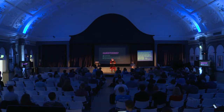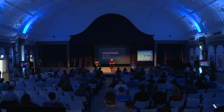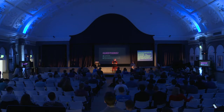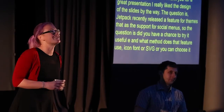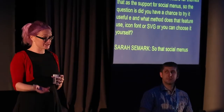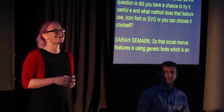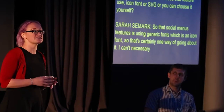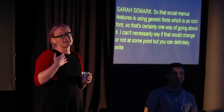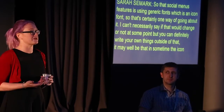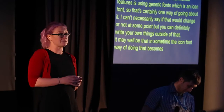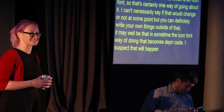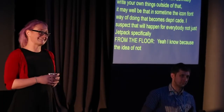Thank you for a great presentation. The question is: Jetpack recently released a feature for themes that adds support for social menus. Did you have a chance to try it, and what method does it use — icon font or SVG? That social menus feature is using Genericons, which is an icon font. It may well be that the icon font way of doing it becomes deprecated in favor of SVG at some point — I suspect that will happen for everybody, not just Jetpack specifically. Not fighting the line height issue would just be amazing.